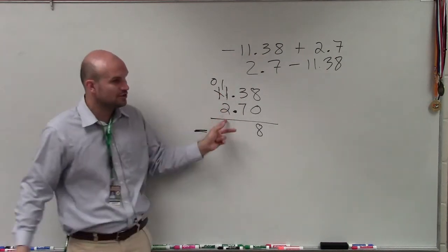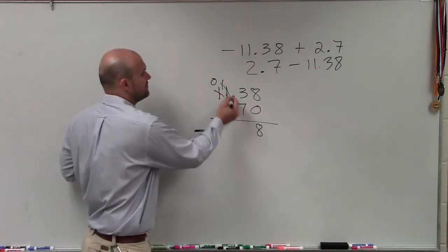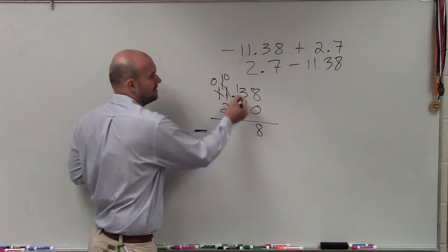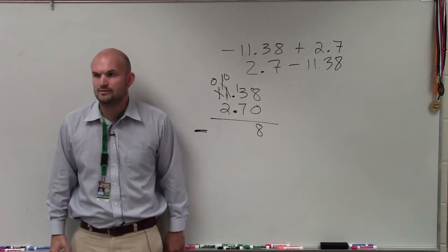Now, obviously, I could subtract 11 minus 2. But remember, I still need to borrow to get to here. So I'm going to borrow from the 11, which will make that 10, and then bring that over to a 13. Does that kind of make sense, my borrowing for that?